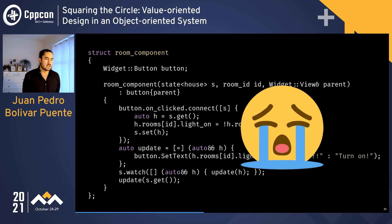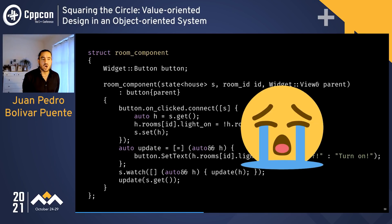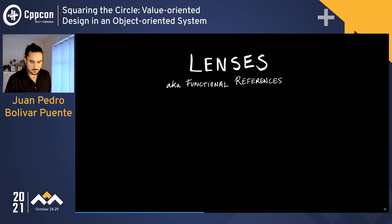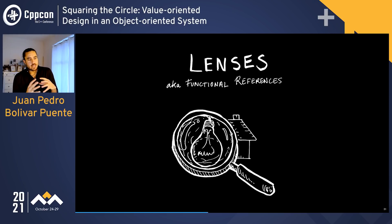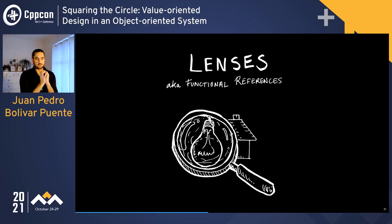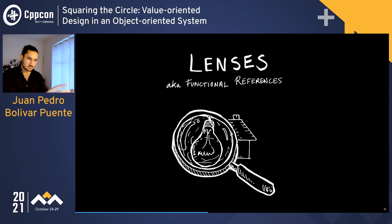When the button is clicked, we get the current value — a copy of the house — turn on the light in the right room, and set the whole house back into the state. The update function gets the right room, checks the light-on state, and connects it. But we're unhappy: this component needs to know about the house, about how to navigate to the right room by ID, when it should only care about rooms regardless of where they are.